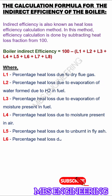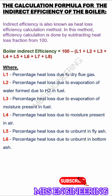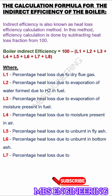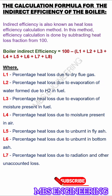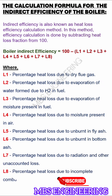L5 is the percentage heat loss due to unburnt in fly ash. L6 is the percentage heat loss due to unburnt in bottom ash. L7 is the percentage heat loss due to radiation and convection loss. L8 is the percentage heat loss due to incomplete combustion in the boiler.